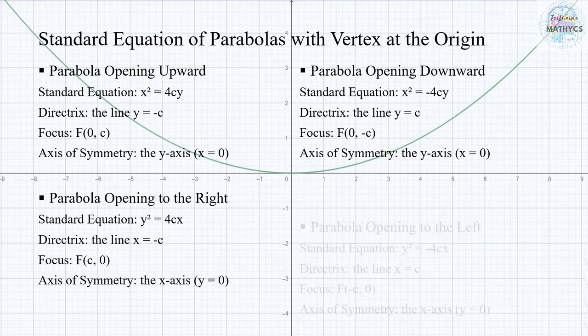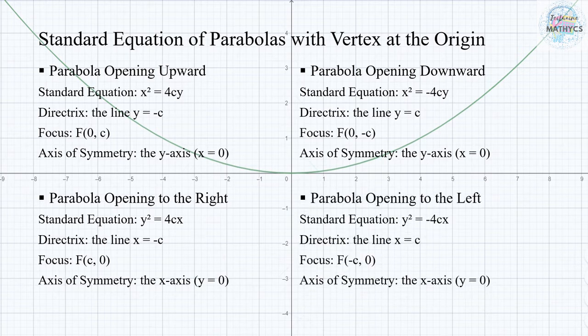A parabola opening to the left has an equation of y squared equals negative 4Cx, with the directrix at line x equals C, its focus is at (negative C, 0), and the axis of symmetry is at the x-axis where y equals 0.